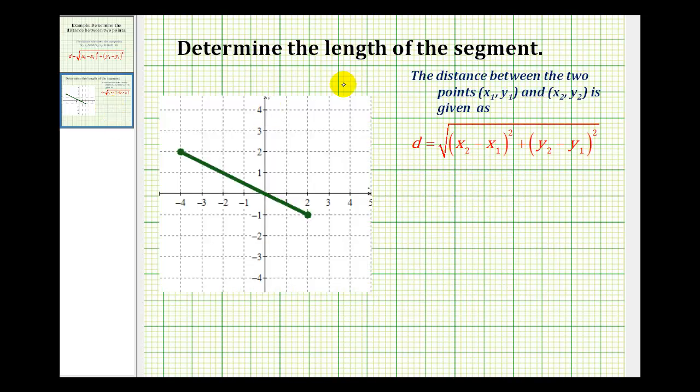We want to determine the length of the segment, which means determine the distance between the two endpoints. Let's start by determining the coordinates of the endpoints. This endpoint would have the coordinates (2, -1), and this endpoint here would have the coordinates (-4, 2).